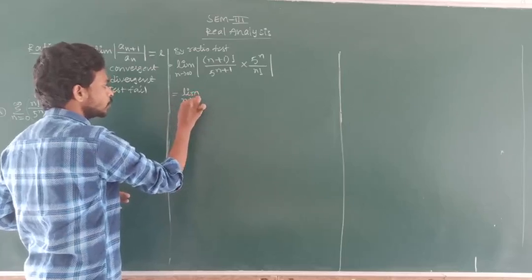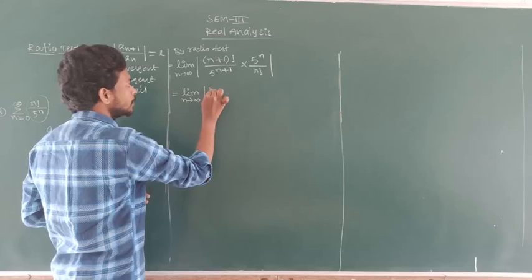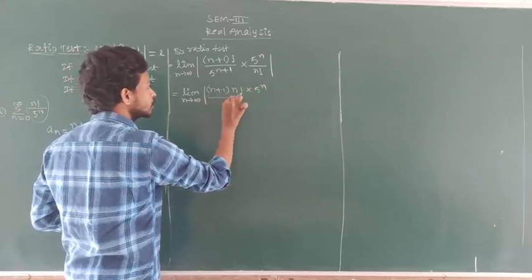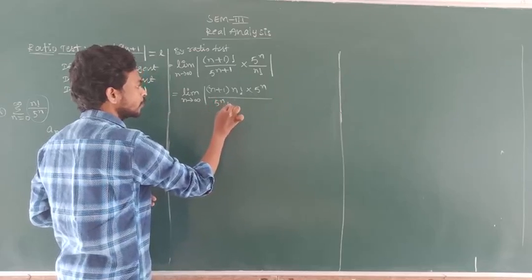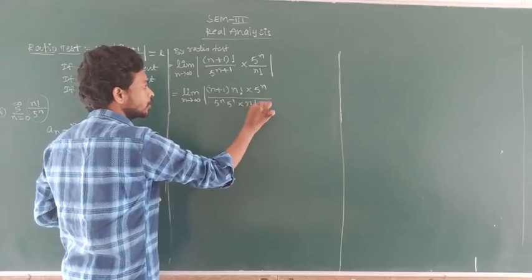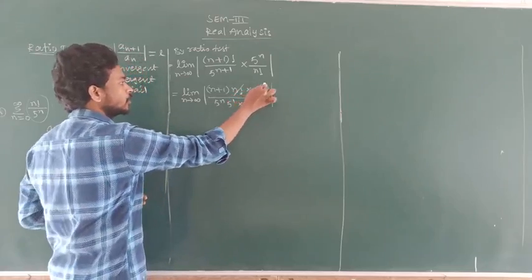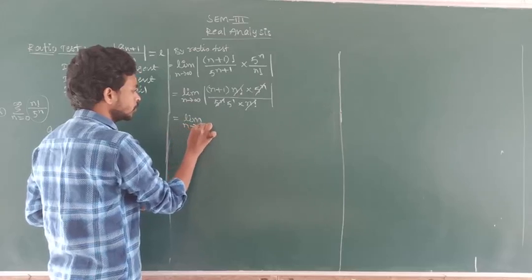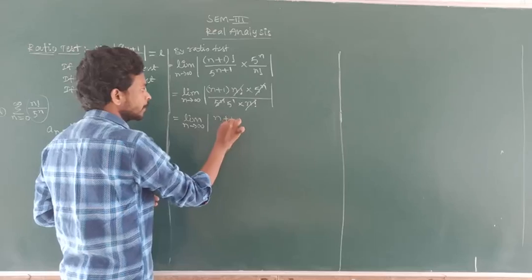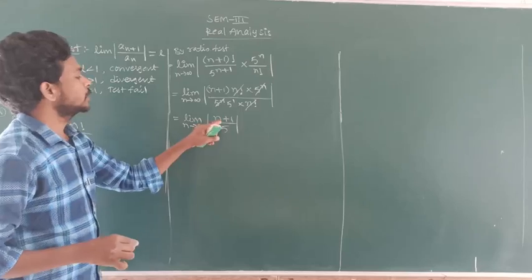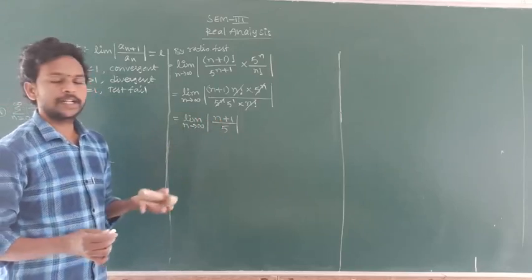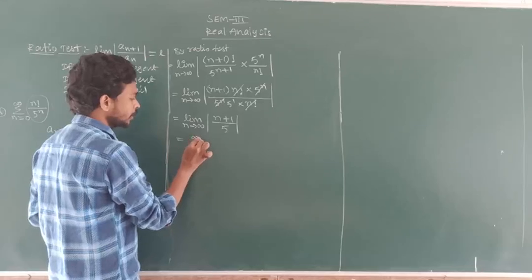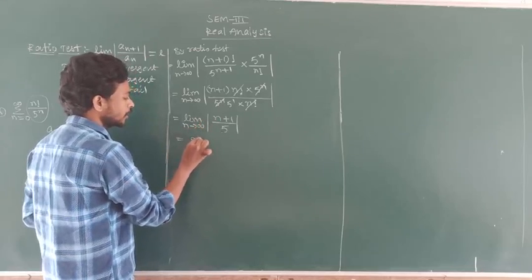Limit as n tends to infinity. This can be written as n plus 1 into n factorial, times n factorial into 5^n, divided by 5^n into 5^1 into n factorial. n factorial cancels with n factorial, and 5^n cancels with 5^n. We get the limit of n plus 1 by 5 as n tends to infinity, which is infinity. Infinity by 5 is infinity.